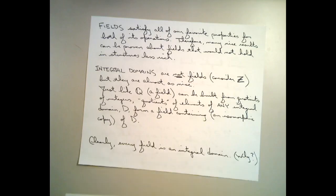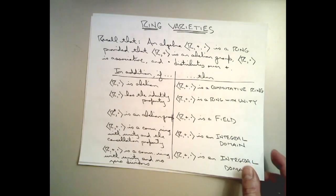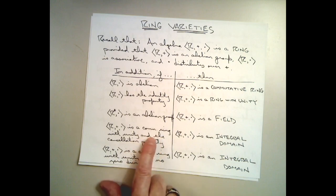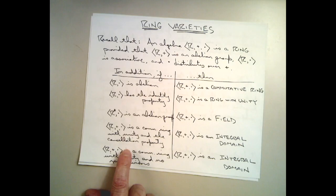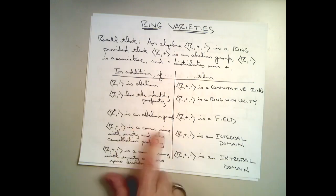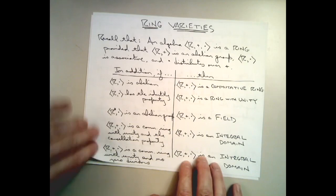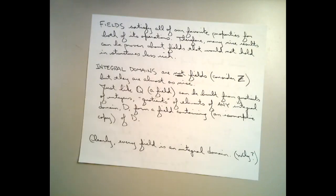Now, I think it's clear that every field is an integral domain. What do we need to be an integral domain? It has to be a commutative ring — well, fields are commutative rings with unity. Fields do have a unity element and the cancellation property. There's nothing in the definition of a field explicitly about the cancellation property, but if we can show that fields do have the cancellation property, that would be all we need. So whenever I say it's clear that a field is an integral domain, what I'm really saying is it's clear that a field has the cancellation property.